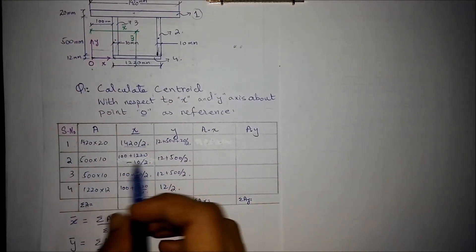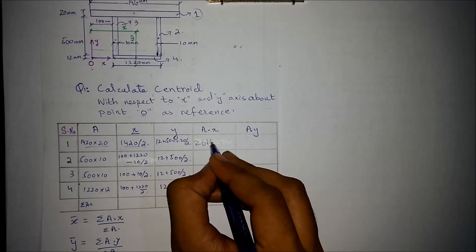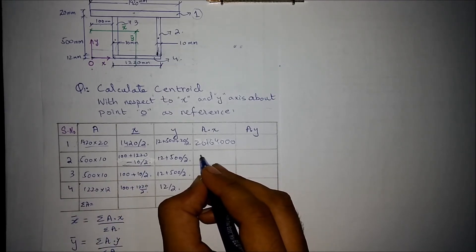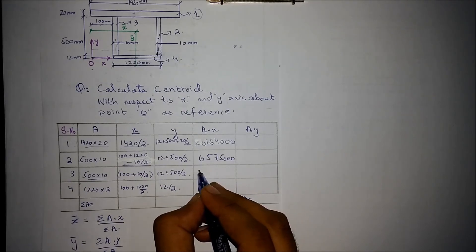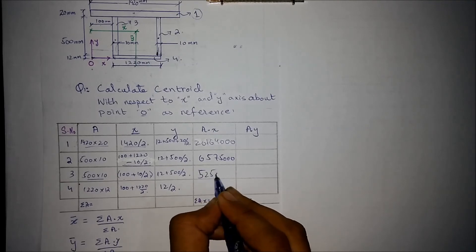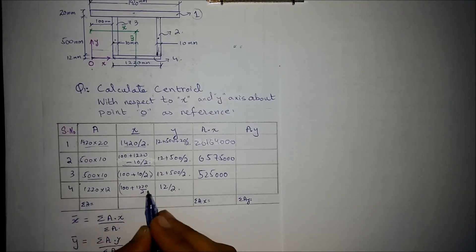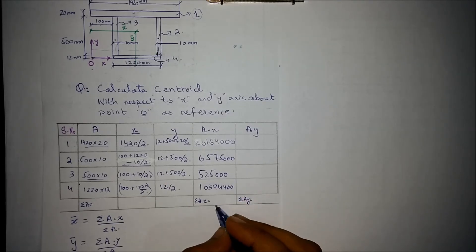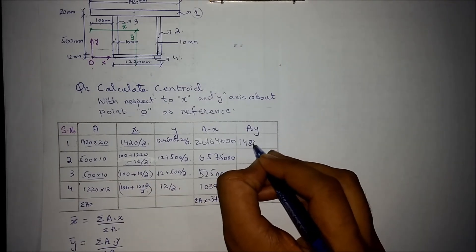We multiply A by x for all the rows. 1420 times 1420 divided by 2 gives us a value. 500 times 10 multiplied by the lever arm gives 65,755. 500 times 10 multiplied by the corresponding arm gives 1,525,000. And 1220 times 12 multiplied by the lever arm gives 103,944. Adding all these together gives the summation of area times x.